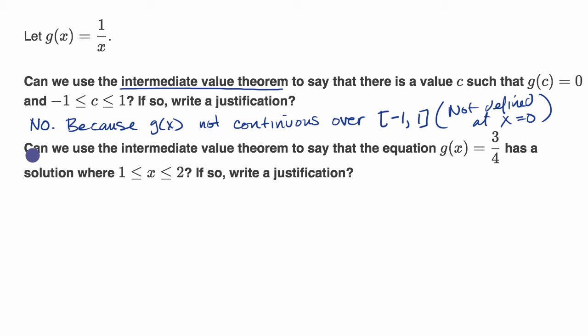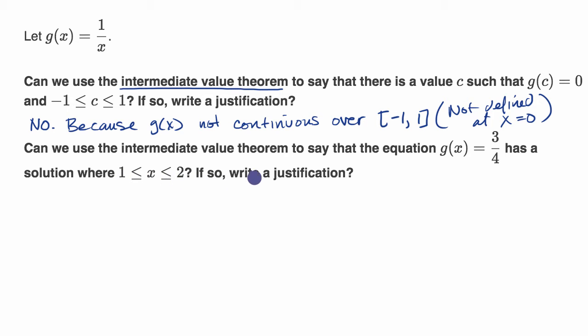Now let's look at the second question: can we use the intermediate value theorem to say that the equation g of x is equal to three-fourths has a solution where one is less than or equal to x is less than or equal to two? If so, write a justification.